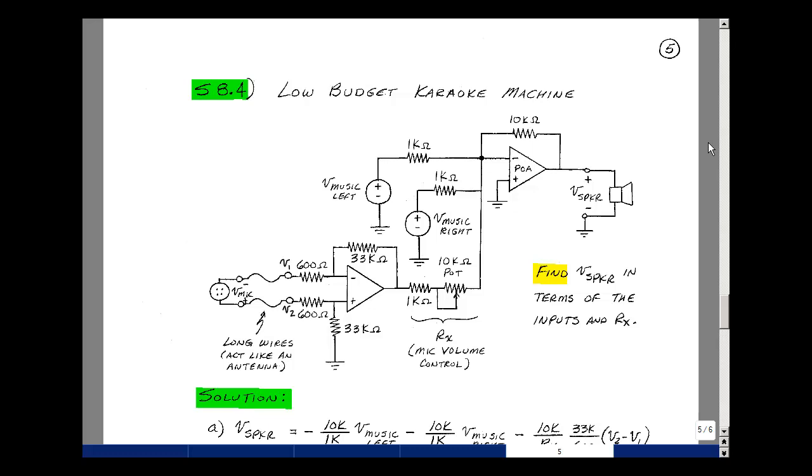This lesson deals with supplemental problem 8.4. You can find this problem in the course ebook in chapter 8 supplemental problems on page 5. In this supplemental problem I'm going to make what I call a low-budget karaoke machine using the circuits of supplemental problem 8.1 and 8.3.